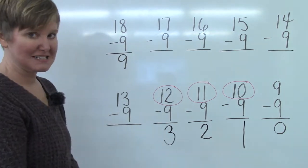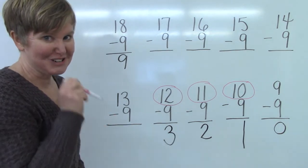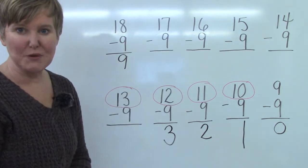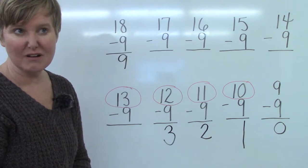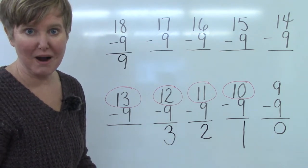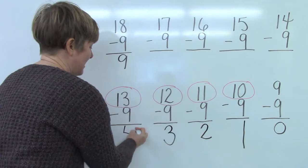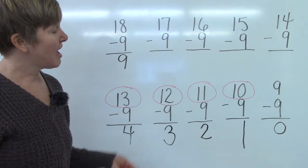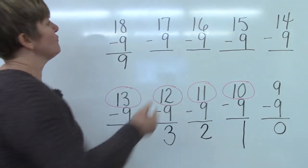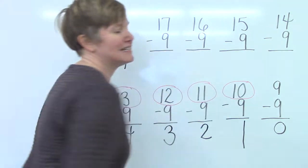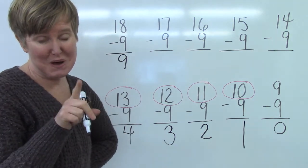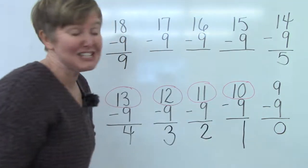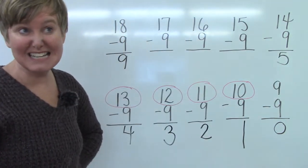We have thirteen minus nine. If we were to use our magic math we could add the one and the three together and that would be four. And our answer is four. Thirteen minus nine is four. I went about way over here. Fourteen minus nine. If we add the one and the four together it gives us five and that is the answer. Fourteen minus nine is five.